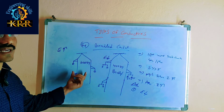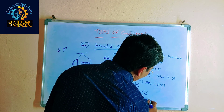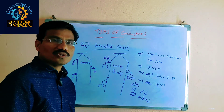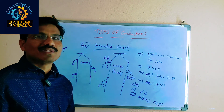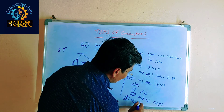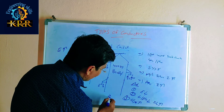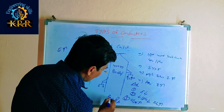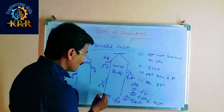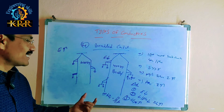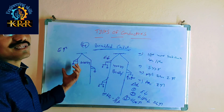Second, the inductance per phase will be reduced when using bundle conductors compared to normal conductors. And the characteristic impedance will also be reduced, especially in long transmission lines. These are the advantages of using bundle conductors over normal conductors.